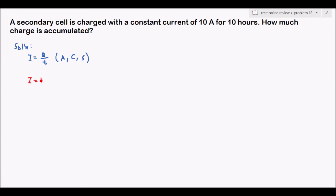Writing our given: I equals 10 amperes, the charge Q is unknown, and our time is 10 hours.